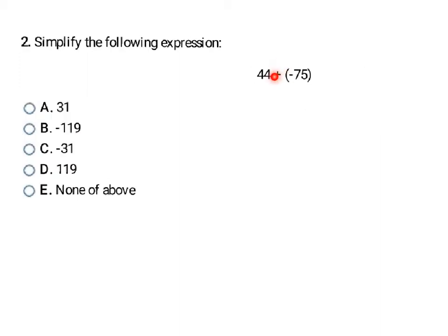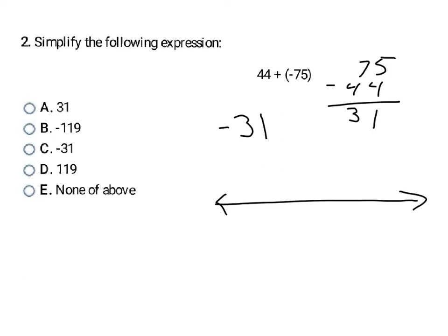Now I'm still adding, so I don't have to change any signs, but now I have a positive number and a negative number. So I'm going to subtract those numbers. When I subtract 75 minus 44, I end up with 31. However, I have to look at the sign of the bigger number. My bigger number here is 75 and it's negative, so my answer is also negative. If you get stuck, think of a number line — you're starting at 44 and moving negative 75, so you're going down by 75 into the negative realm. That makes my final answer C.